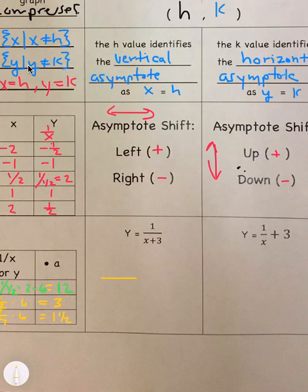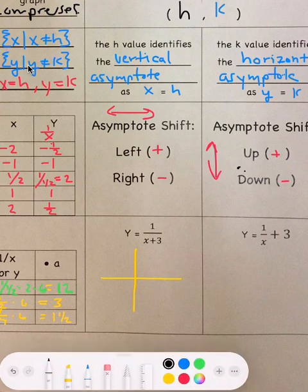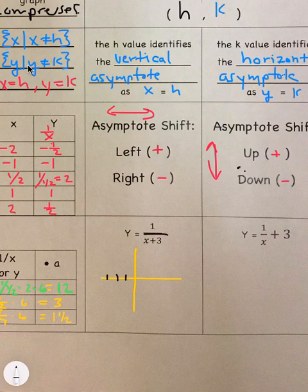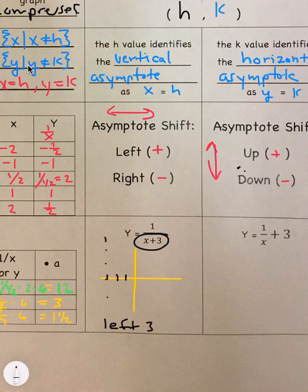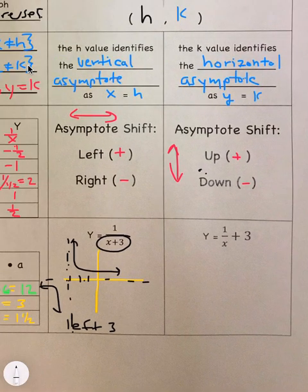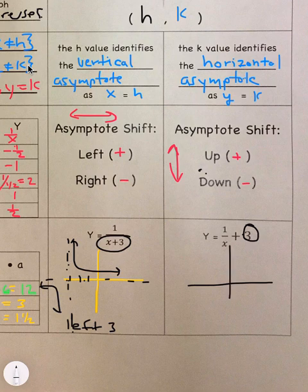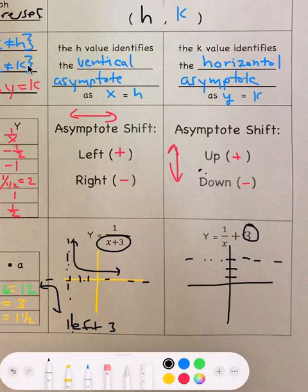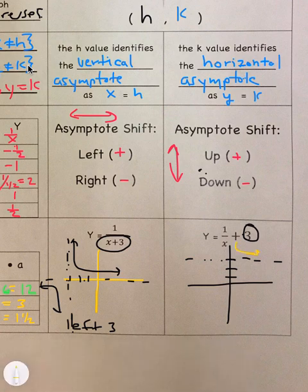So when we look at our transformations, so when it's plus 3 here, we say left 3. And so this is where the asymptote would be at plus 3, and it's still here. And so the graph is going to be something like this and like this. When the plus 3 is on the outside, that means it shifts up 3, like that. So that means the graph is going to look like this and like this. There's always 2 asymptotes.